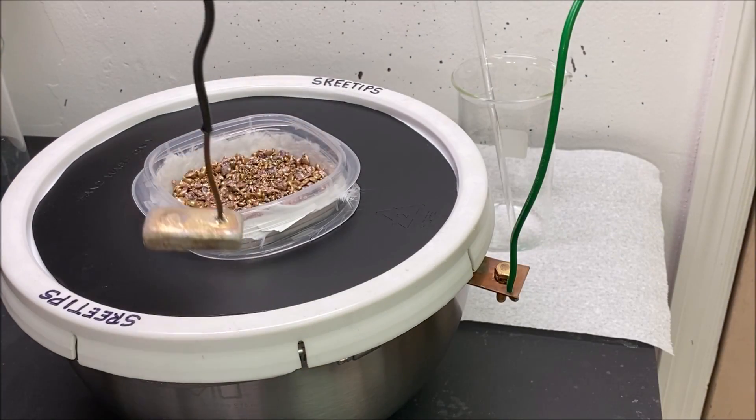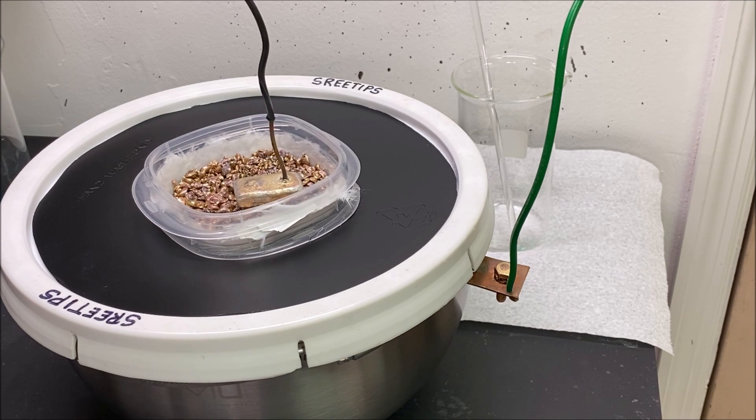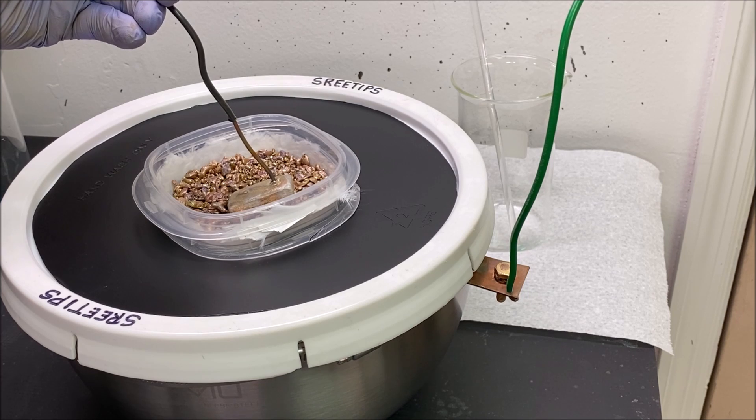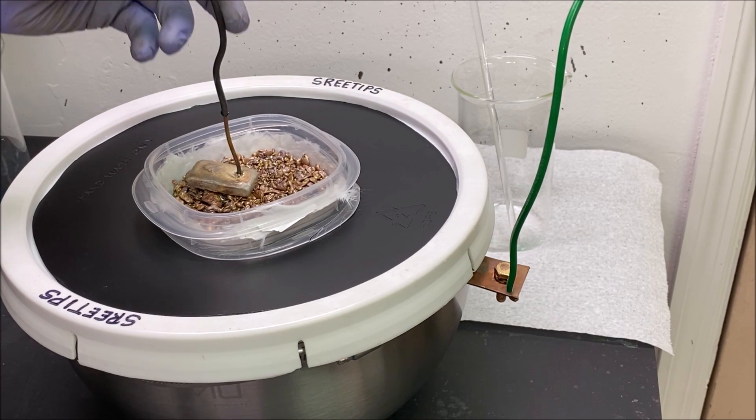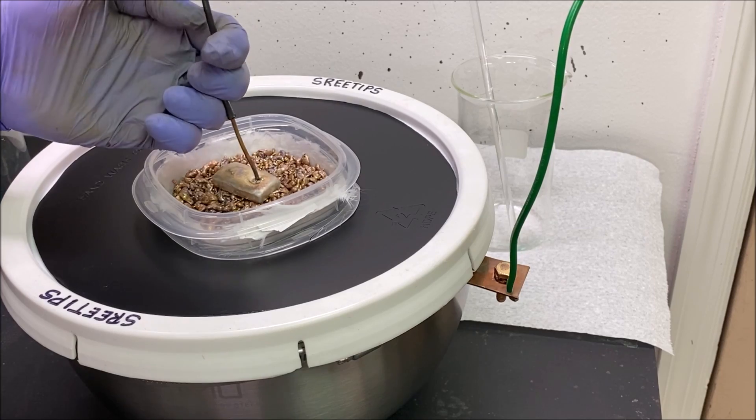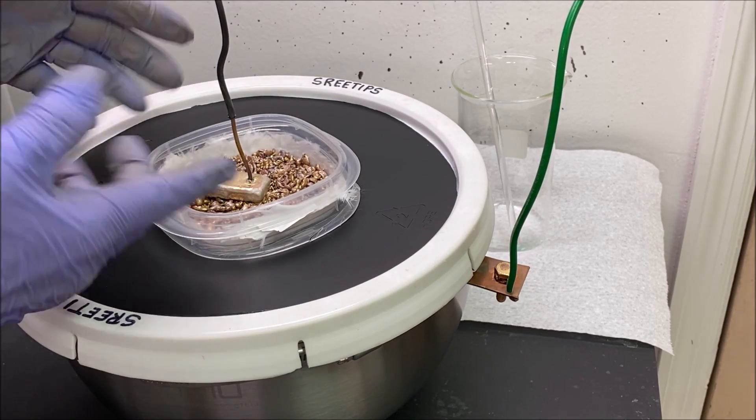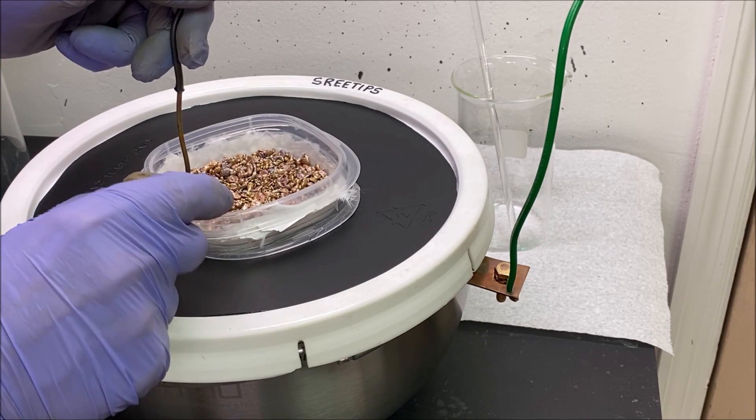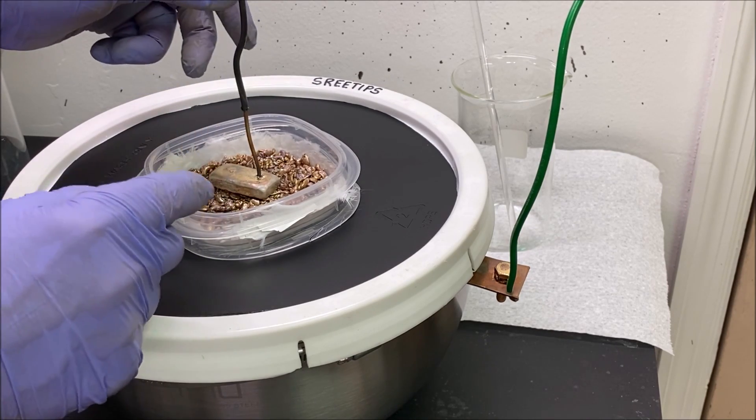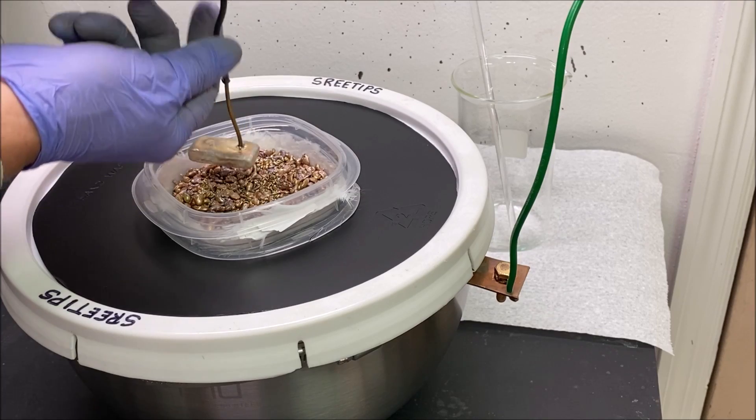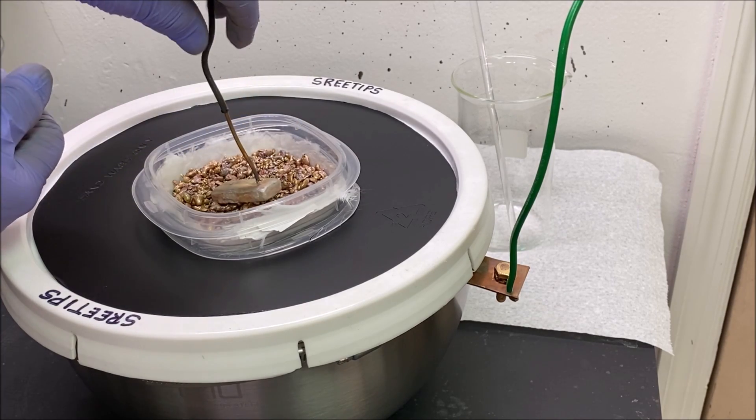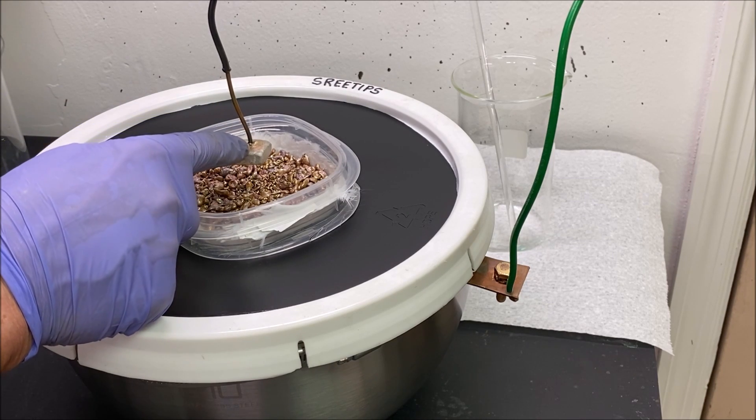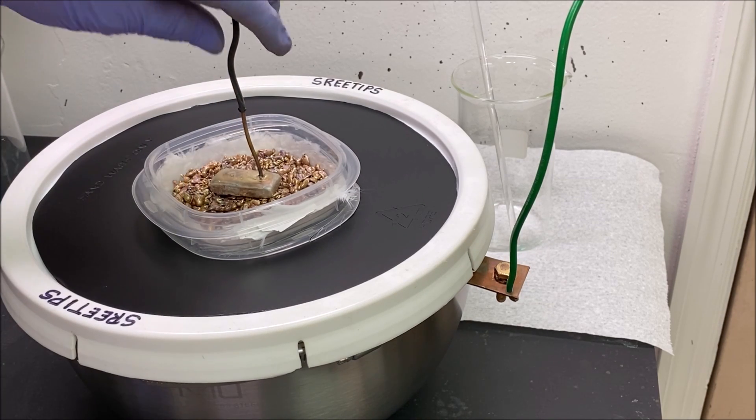Here's our anode electrode bar that's going to go on the top of the impure silver that's in our anode basket. By the way, if you ever get one of these, don't bend it down here. If you need to bend it to get it to conform, bend it up here to make it fit. The more you bend it down here at this connection, the more likely it is to break on you.